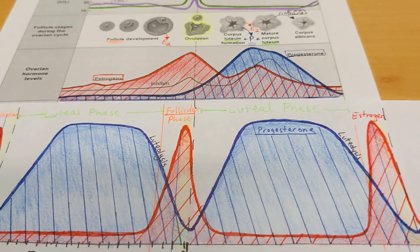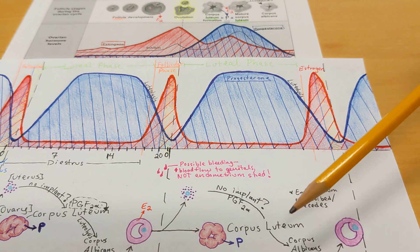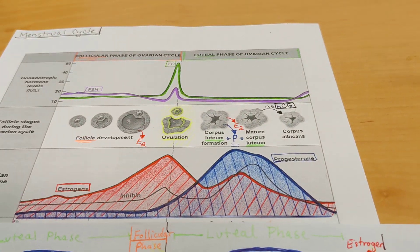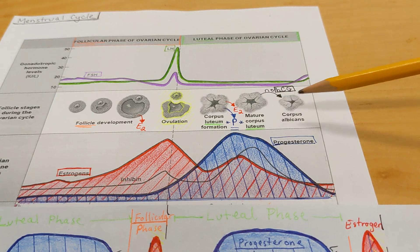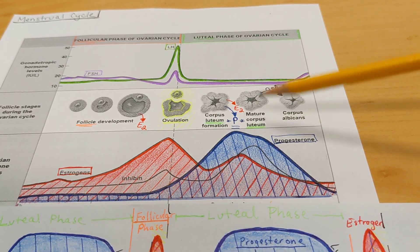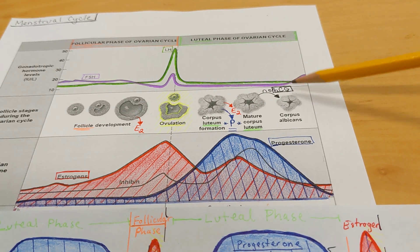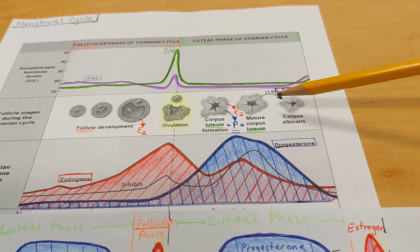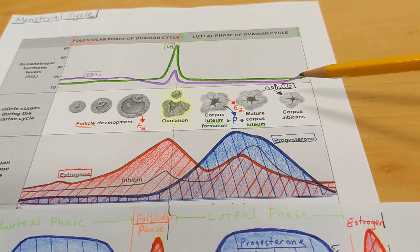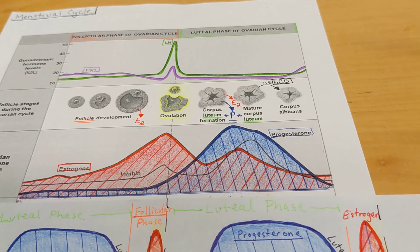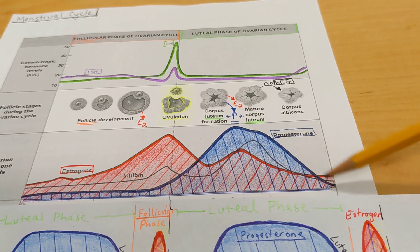The end of the luteal phase is triggered by a different mechanism in the menstrual cycle versus the estrus cycle. As a reminder, in the menstrual cycle, if there is a fertilized egg, it will ultimately secrete human chorionic gonadotropin to sustain the corpus luteum. If there is no fertilization within about 10 days after ovulation, the lack of HCG will lead to the corpus luteum automatically degrading into the corpus albicans. In the absence of a baby or baby hormone, the corpus luteum automatically degrades, and as the corpus luteum cells die, less and less progesterone and estrogen are secreted.